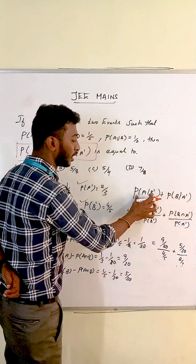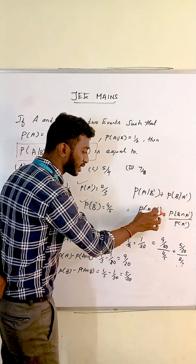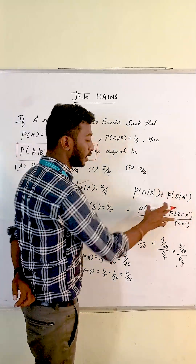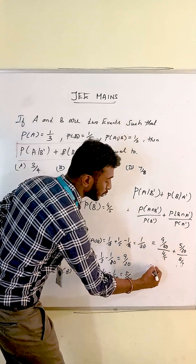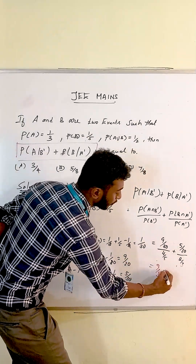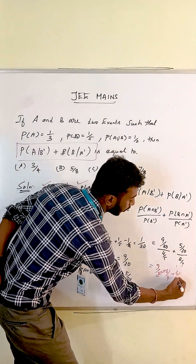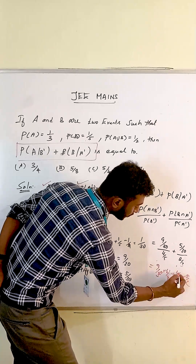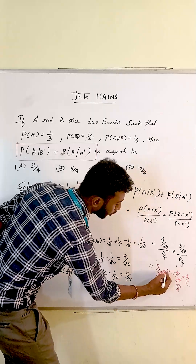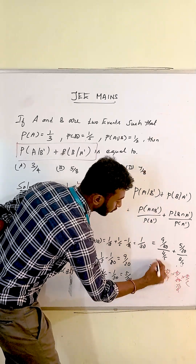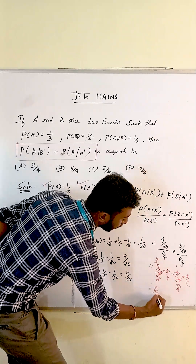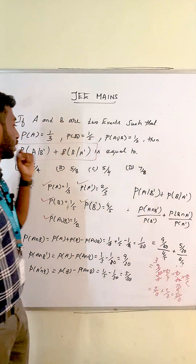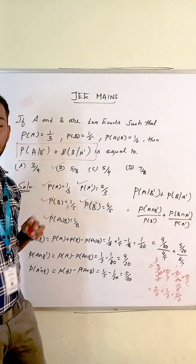Using conditional probability formula: P(A given B-bar) = P(A intersection B-bar) divided by P(B-bar), and P(B given A-bar) = P(B intersection A-bar) divided by P(A-bar). Substituting the values: (9/30) into (5/4) plus (5/30) into (3/2), which gives 10, then simplifying to 3/8 plus 2/8, equal to 5/8. So the correct answer is 5/8.